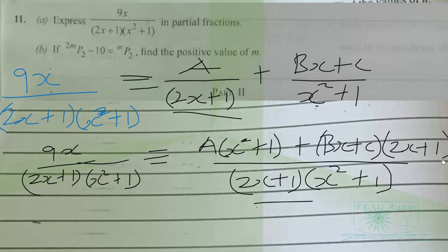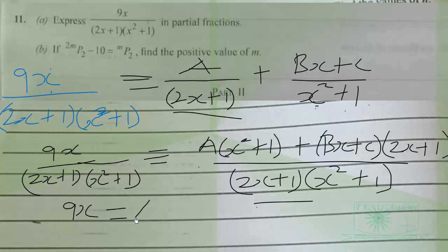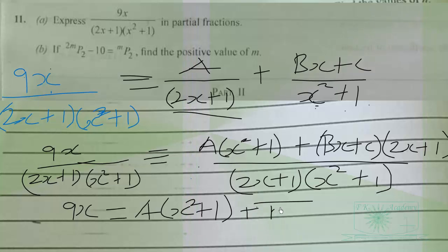Since the denominators are the same, we can equate the numerators. So we have 9x = A(x² + 1) + (Bx + C)(2x + 1).